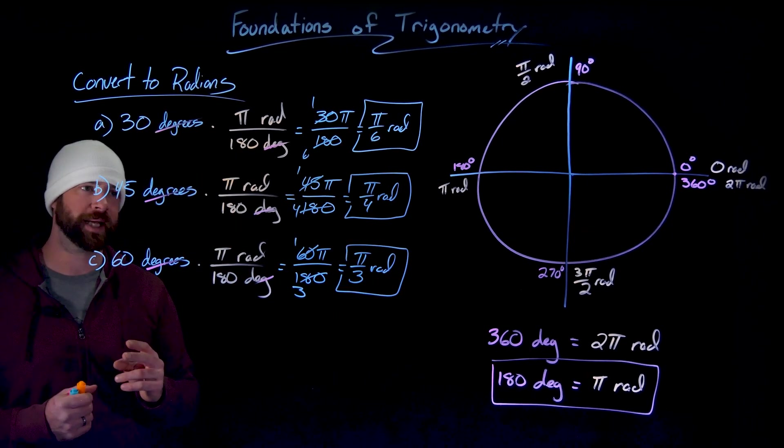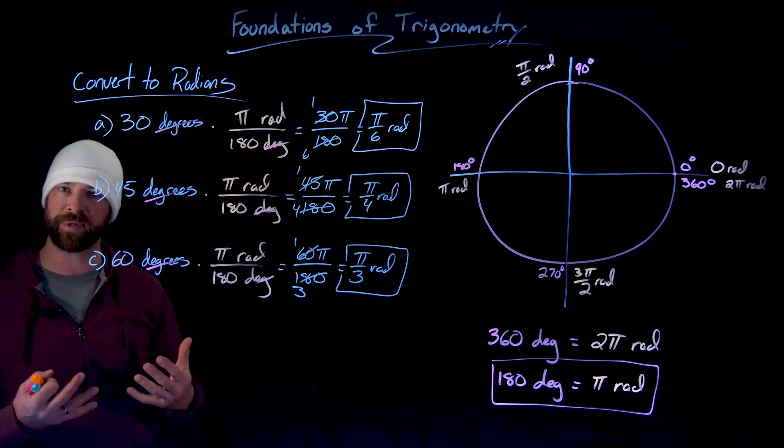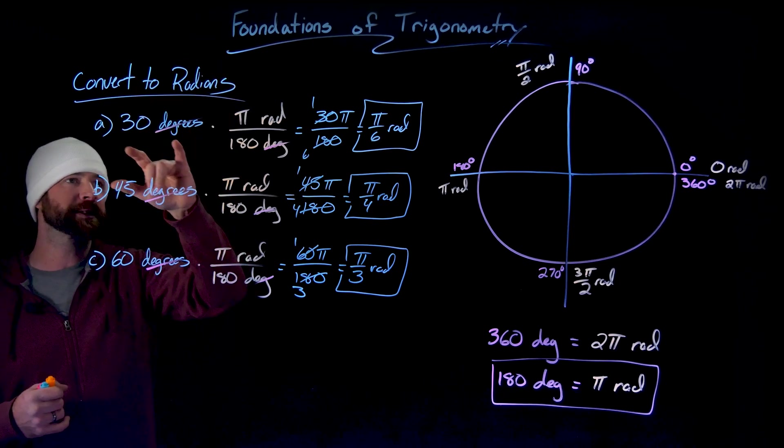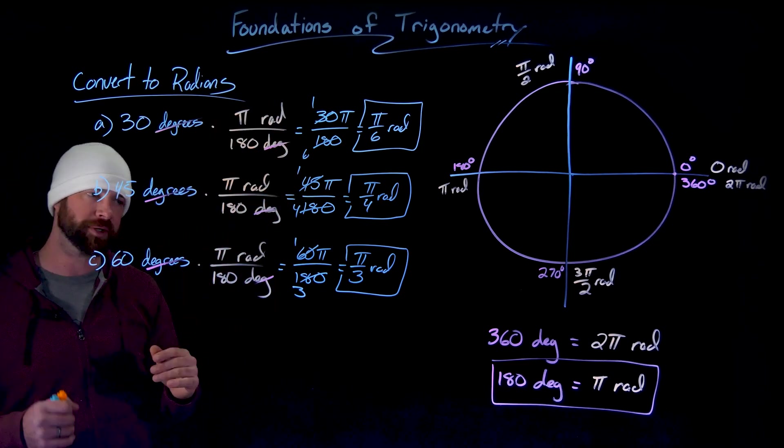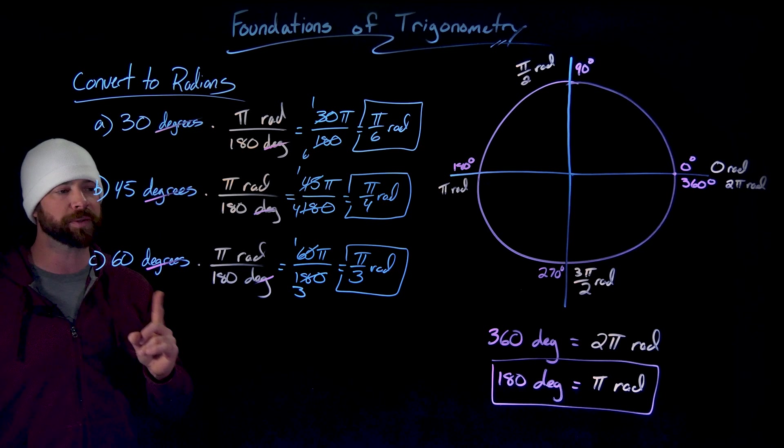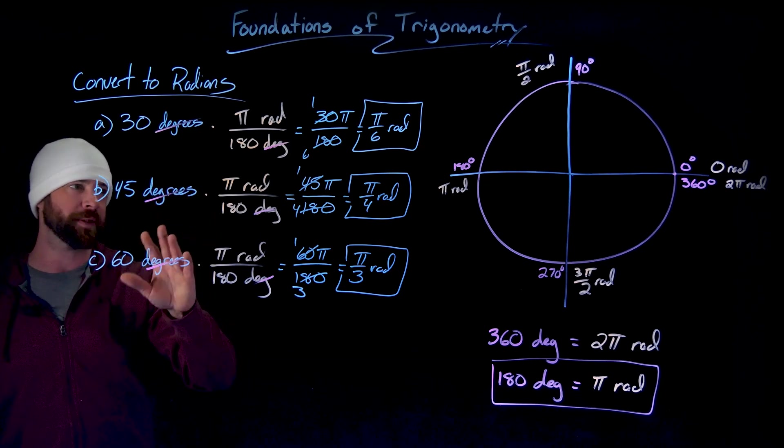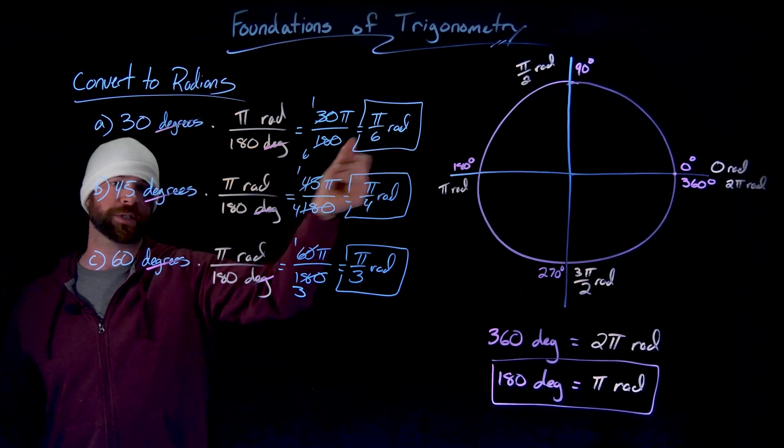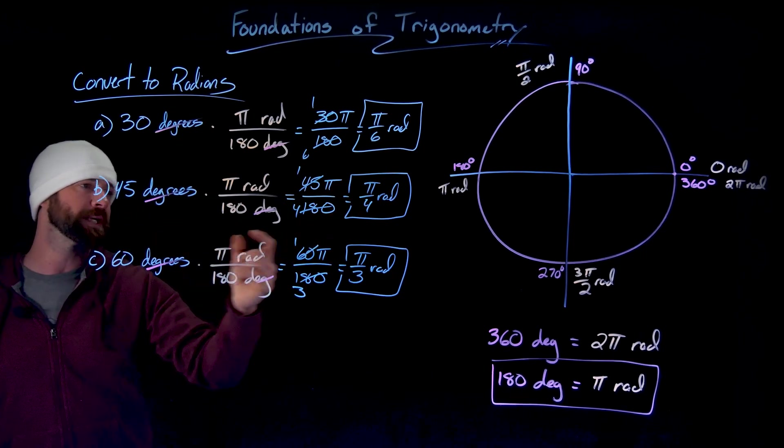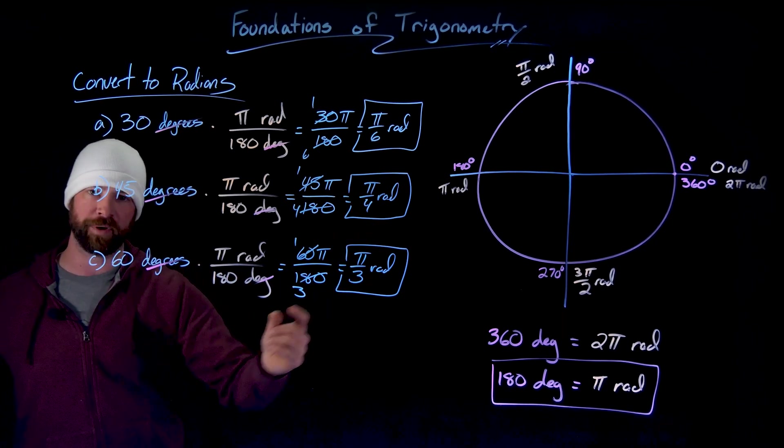Two things to say here, I'm not going to show an example, but if I want to convert from radians back to degrees, which is something that we could want to do, I simply would flip this over so I could cancel the units of radians. I'm not going to show any examples there, but I also want to say just for your notes at this point, I would pause the video and write down these three facts we just found that 30 degrees equals pi over six radians, 45 degrees is pi over four radians, and 60 degrees is pi over three radians.